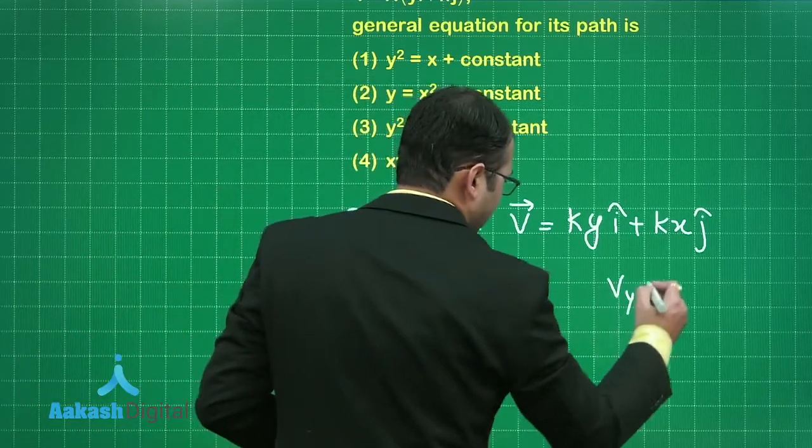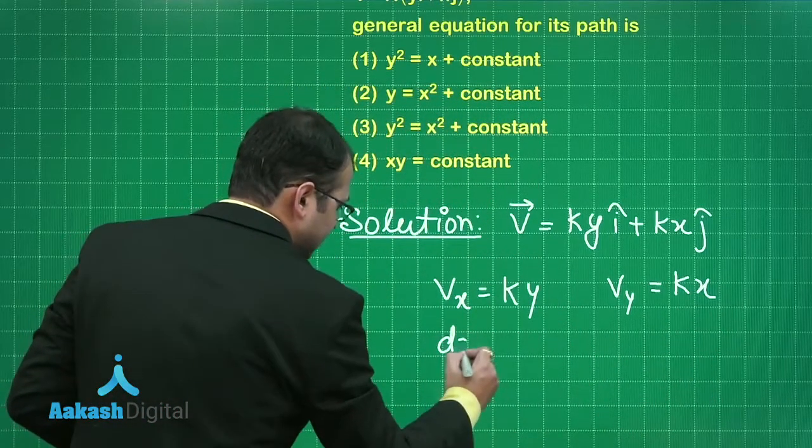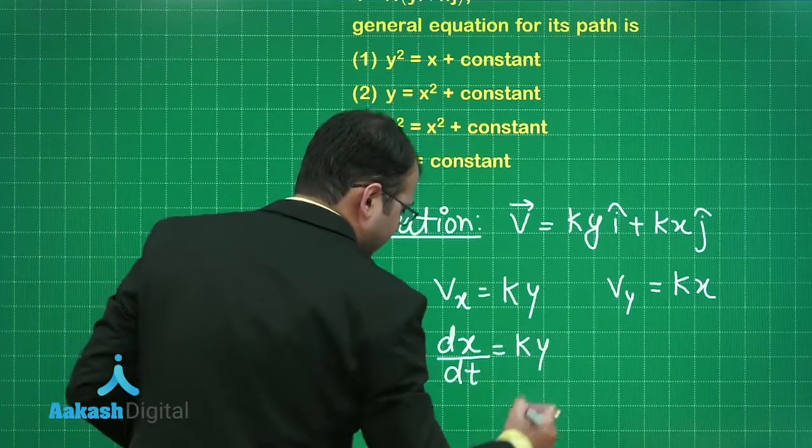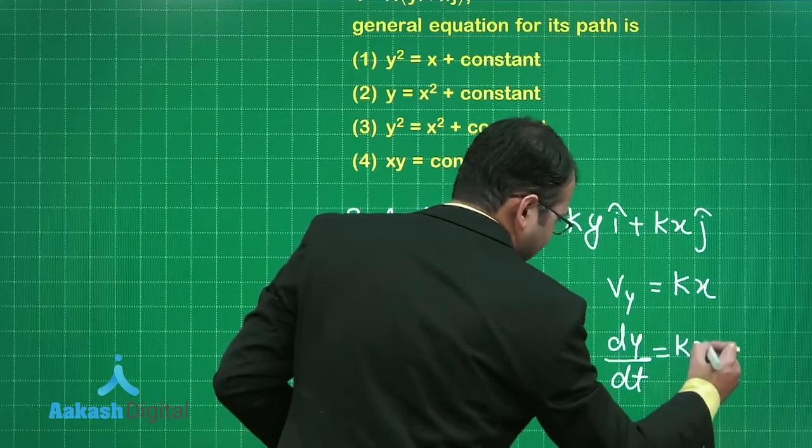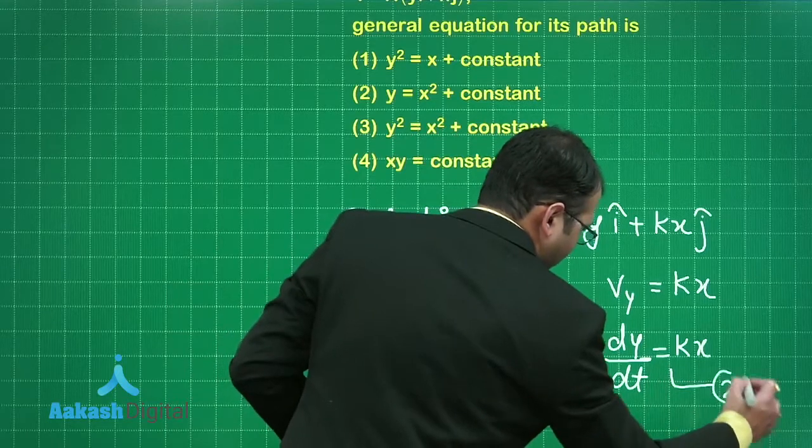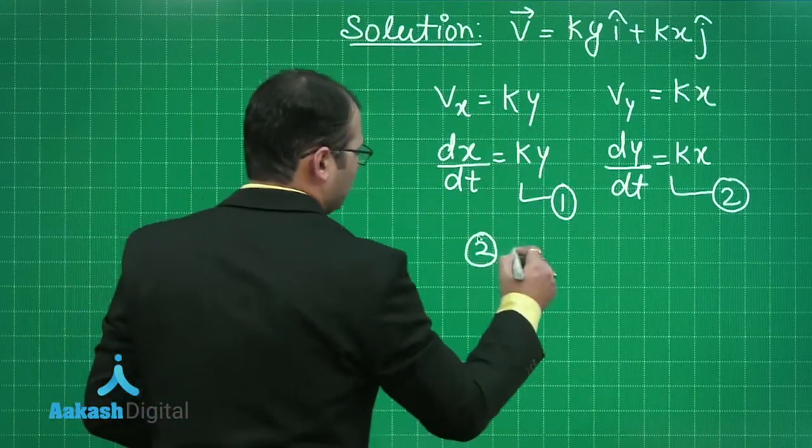Similarly, Vy is equals to K x. This Vx can be written as dx by dt that would be equal to K y and this Vy can be written as dy by dt which will be written as K x. Let's consider this as equation 1 and this as equation 2.